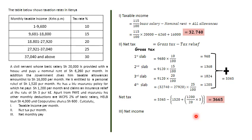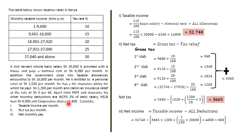For part three, net income is taxable income minus all deductions. Deductions include net tax of 3,665, insurance premiums of 1,200, WCPS at 2% of basic salary, health fund of 4,000, and cooperative shares of 600. So 32,740 minus all these gives net income of 22,875 shillings per month. That concludes the topic of commercial arithmetic. Look out for upcoming lessons on circles, chords, and tangents.